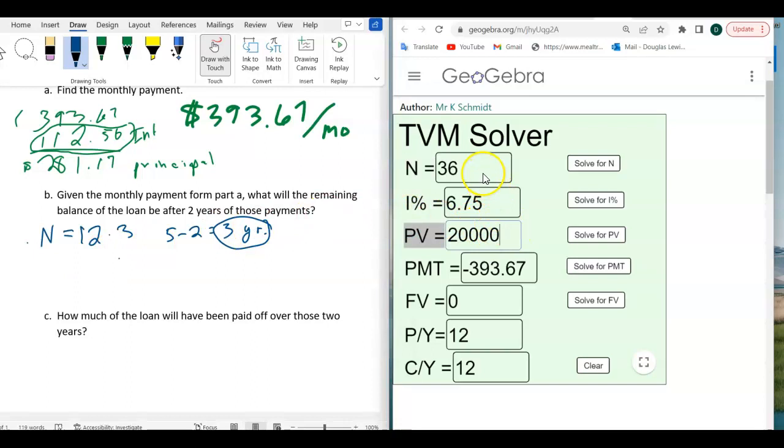And the present value, this is at two, after two years, the present value is no longer $20,000. It has been reduced. It has been reduced because you've made, for two years, you've made 24 payments of $393. And some of the money has been going to interest and some of the money has been going to principal.